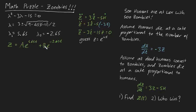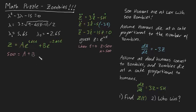Now we need to plug in initial conditions to solve for constants A and B. When t equals zero, the amount of zombies is 500 and the amount of humans is 500. Plugging into the expression gives 500 equals A times 1 plus B. Unfortunately this isn't enough information to solve for both constants, so we need more. We differentiate Z with respect to time and plug in t equals zero.